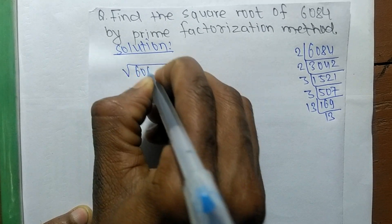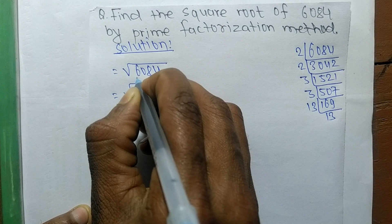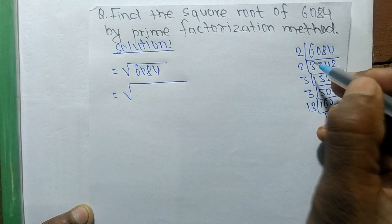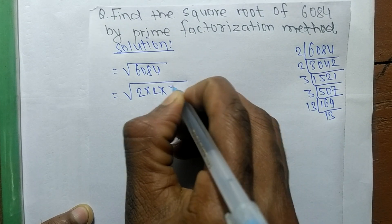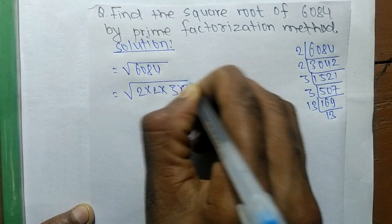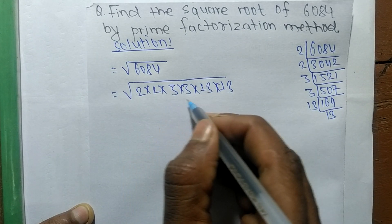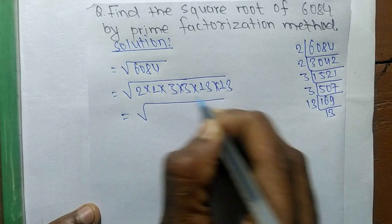From the prime factors of 6084, we can write 2×2, 3×3, and 13×13. After writing all the prime factors, now we make the square of all these numbers.